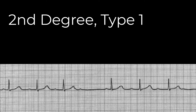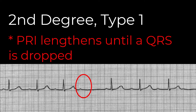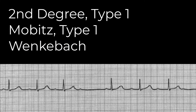In a second-degree heart block type 1, also known as a Wenckebach, we see a progressive lengthening of the PR interval until a QRS is dropped. The origin of the block is usually high in the AV node. P waves are present and the P-to-P interval stays the same because the sinus node is doing its job. It usually has at least one normal PR interval, but subsequent PR intervals lengthen until one impulse fails to go through, and we see a dropped or missing QRS. This drop beat may occur on every third, fourth, or even fifth sinus beat, and then the system resets and the cycle starts over. Because it originates high in the AV node, the QRS complex is usually narrow and relatively normal in appearance.